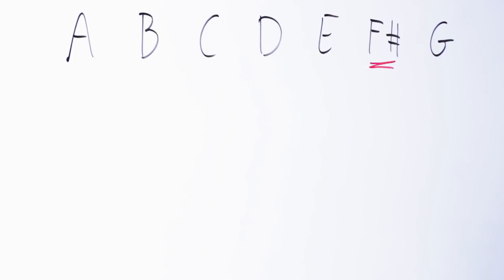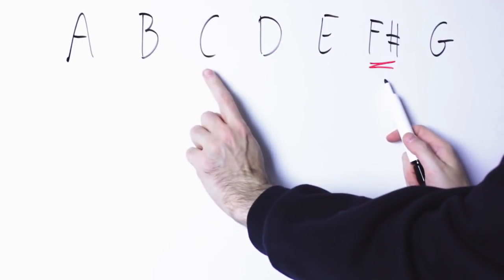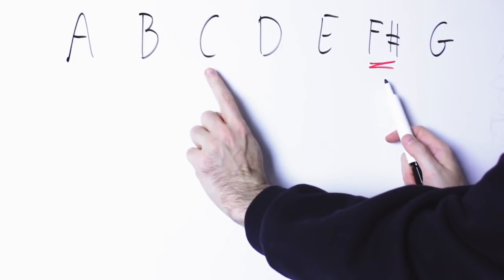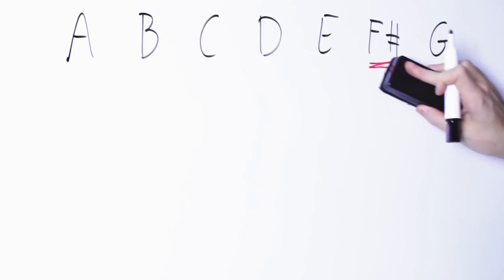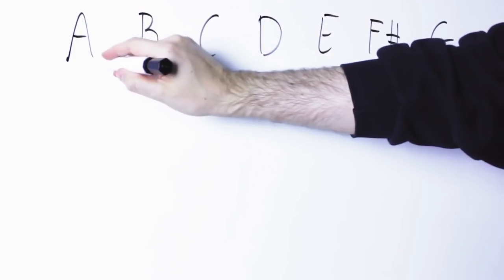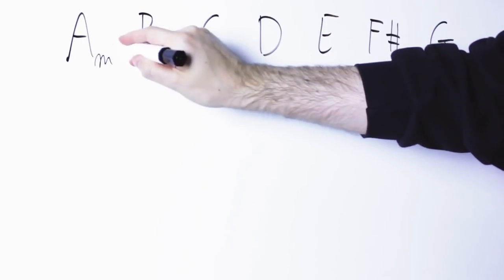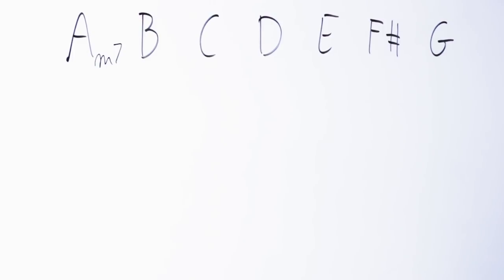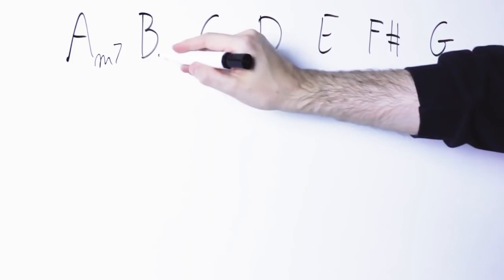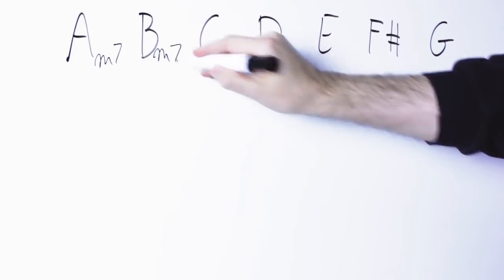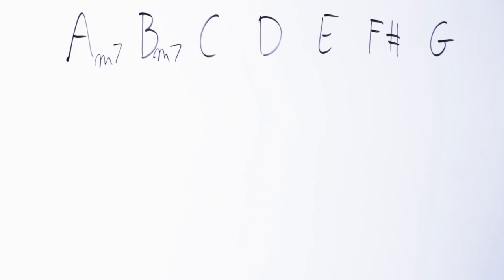As usual, the best way to understand the scale is to harmonize it. So let's see what kind of chords we can build on A Dorian. On the first note I can build an A minor chord A C E, or an A minor seventh chord A C E G. On the second note I can build a B minor chord B D F sharp, or a B minor seventh chord B D F sharp A. On the third note I can build a C major C E G, or a C major 7 C E G B.